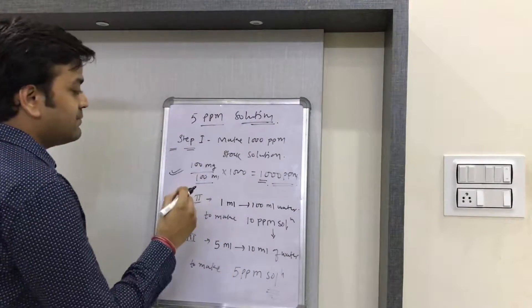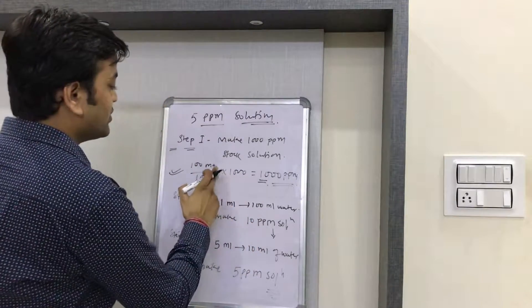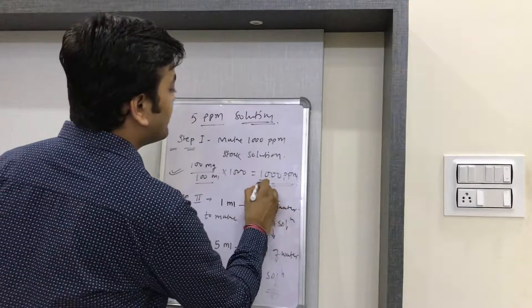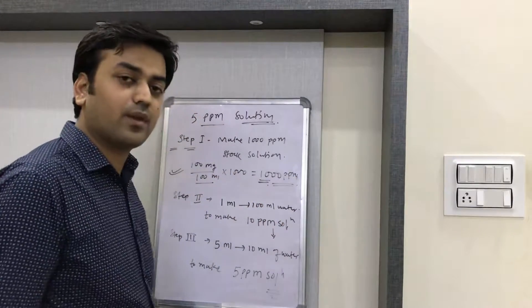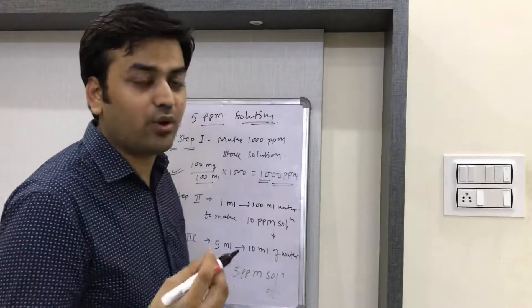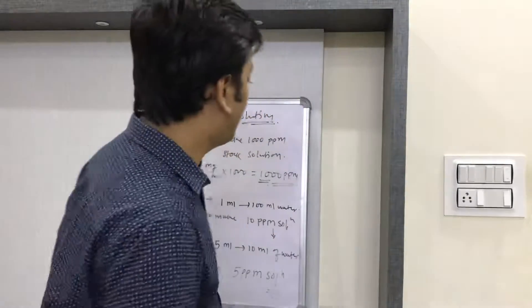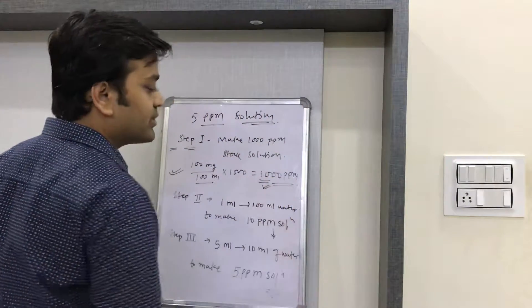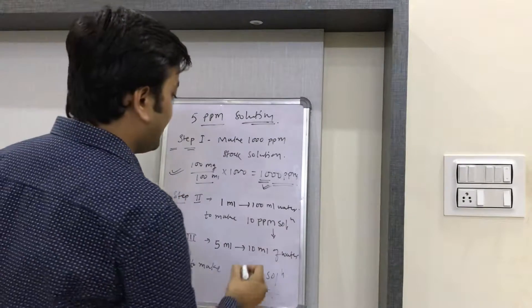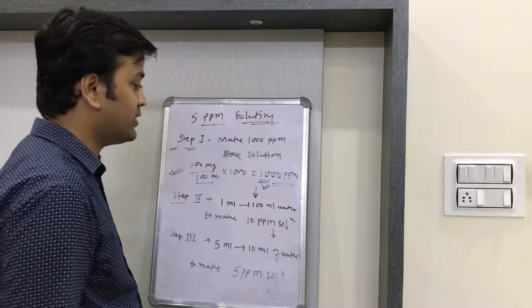To make the stock solution, we take 100 mg of sample in solid form and dissolve it in 100 ml of water to make a 1000 ppm solution. If we take 50 mg of solution, then we will take 50 ml of water to make a 1000 ppm solution.